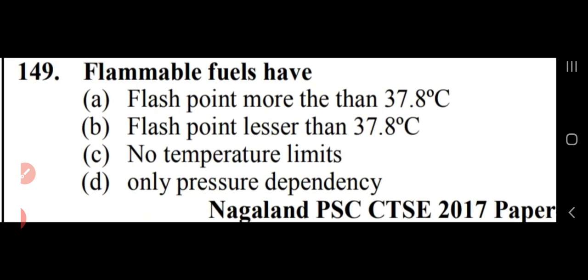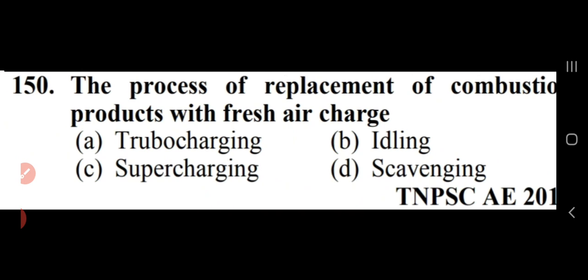Flammable fuels have a flash point below 37.8°C (100°F) — option B. The process of replacement of combustion products with fresh air charge is known as scavenging — option D.